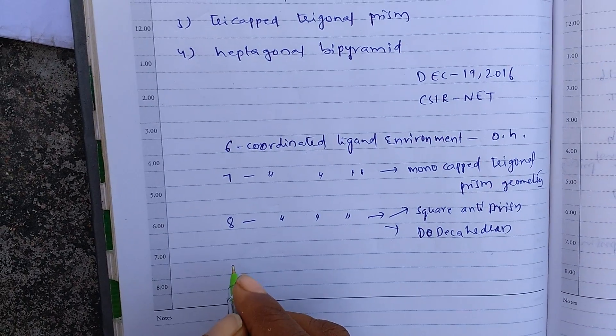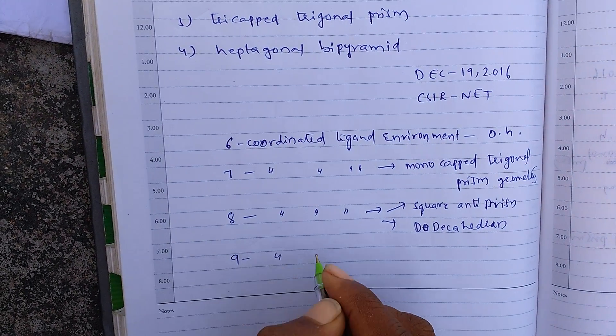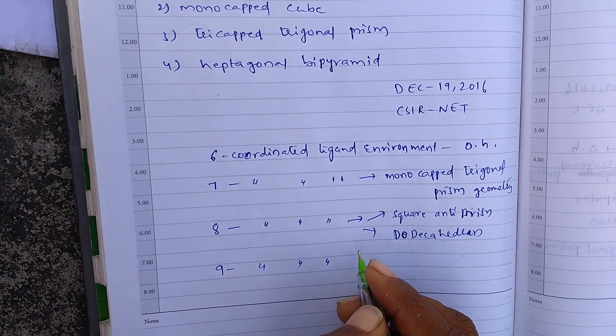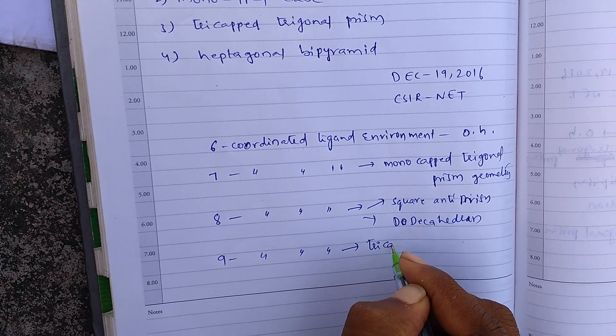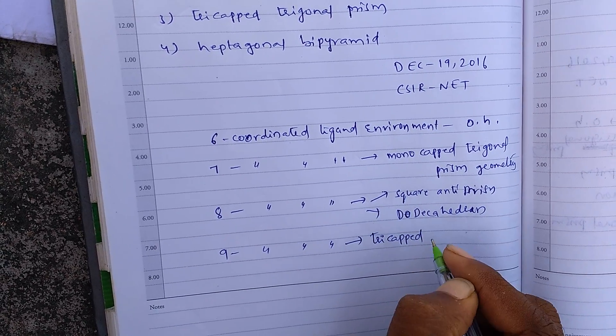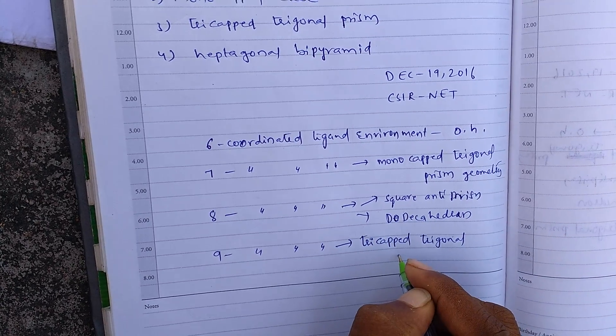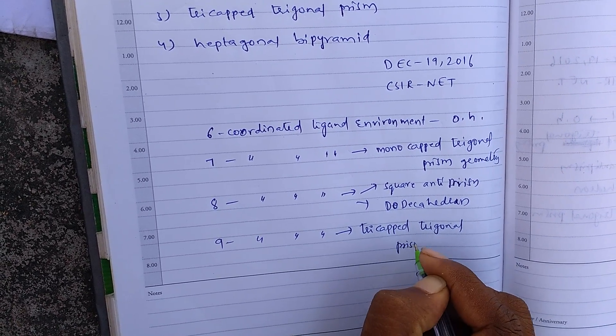And if the metal is in 9 coordinated ligand field environment, it has tricapped trigonal prismatic structure.